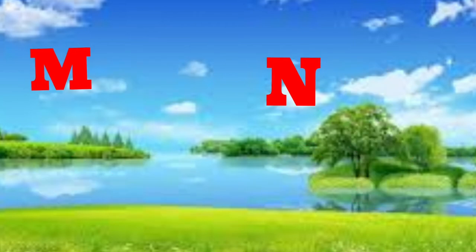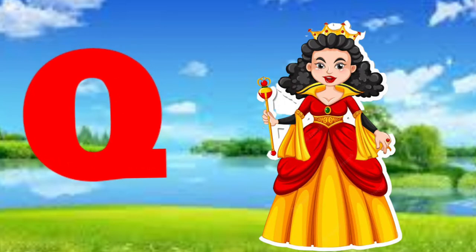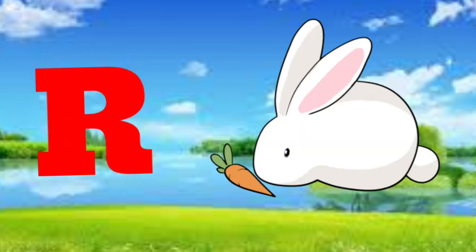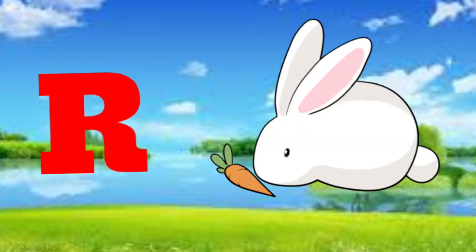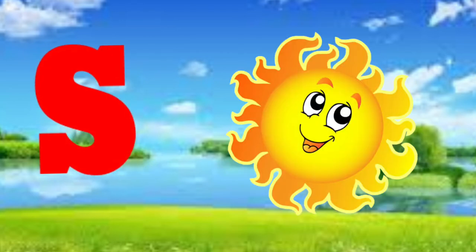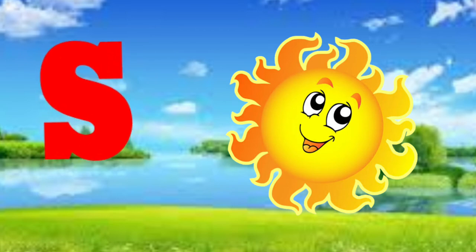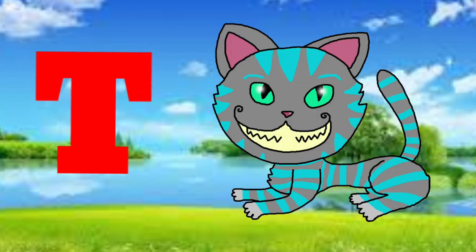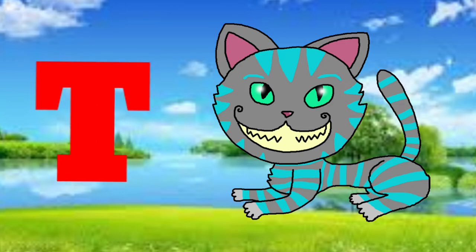Q is for queen, q-q-queen. R is for rabbit, r-r-rabbit. S is for sun, s-s-sun. T is for toad, t-t-toad.